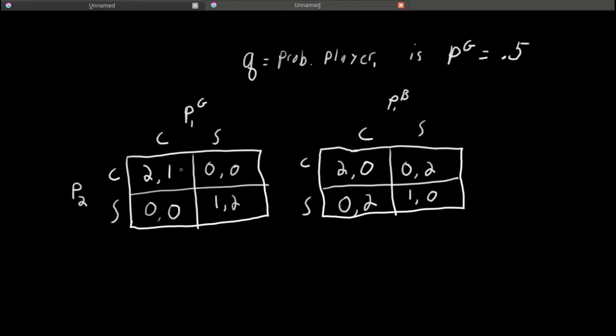And if they both play CC, player 1 gets 1. But if he's the bad guy, he doesn't want to meet up, they both go to CC, he gets 0. So we see now that payoffs can depend on types.